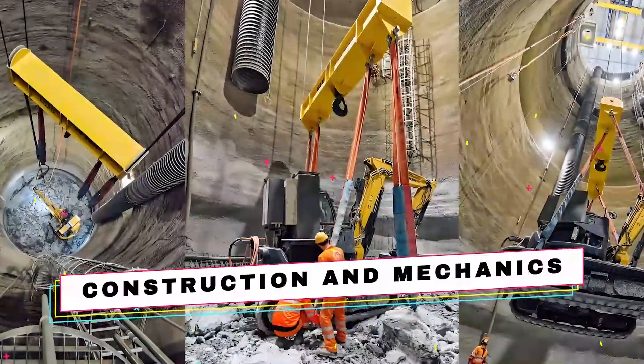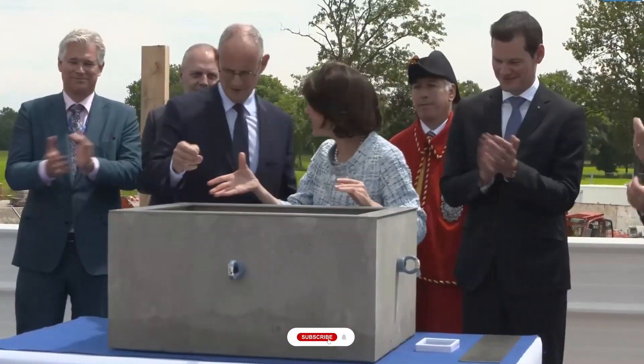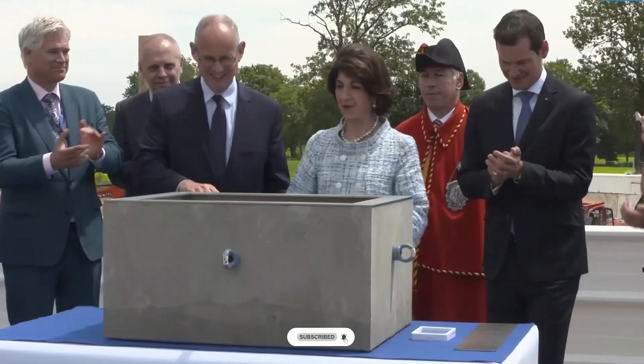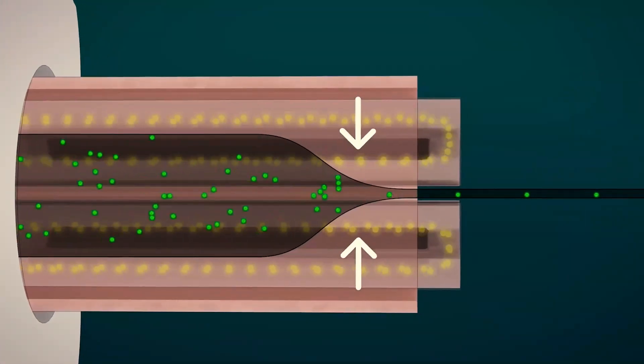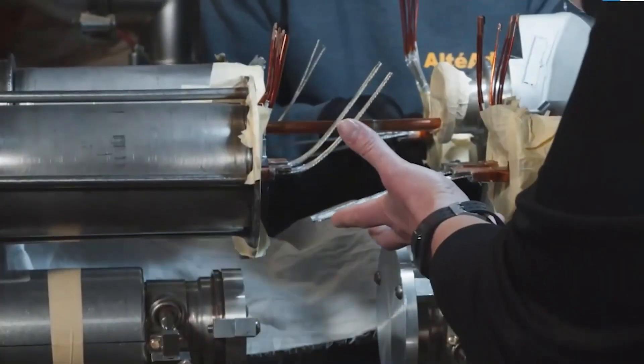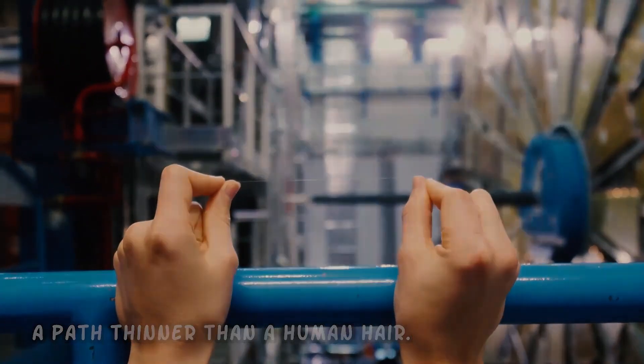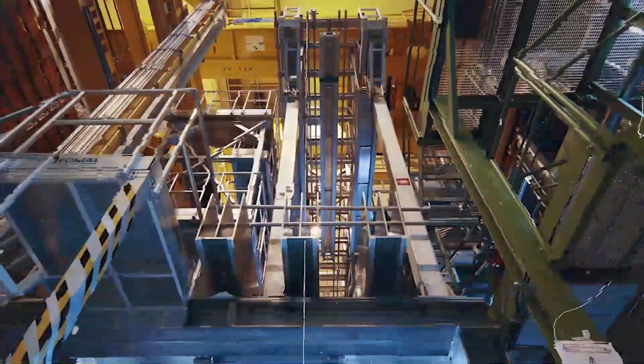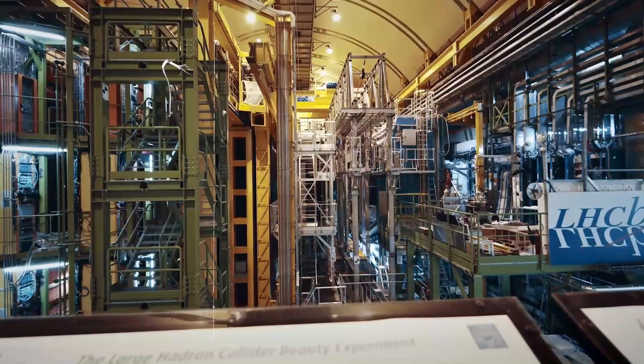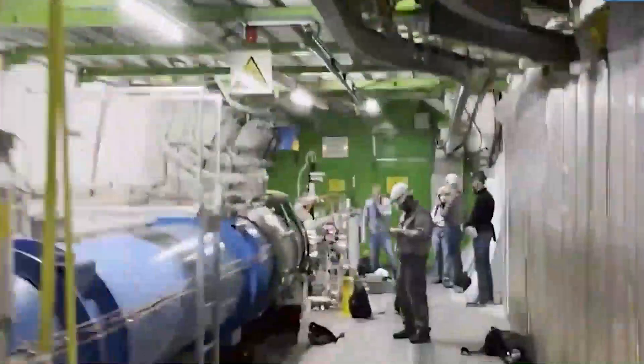Construction and mechanics: The construction of the LHC involved the collective effort of thousands of individuals from diverse backgrounds, spanning over three decades and costing billions of dollars. Its intricate design includes a long, narrow tube encircled by powerful magnets, guiding particles along a path thinner than a human hair. Despite the seemingly minuscule scale of the particles involved, the impact of their collisions reverberates across the scientific community, reshaping our understanding of the universe's most fundamental building blocks.